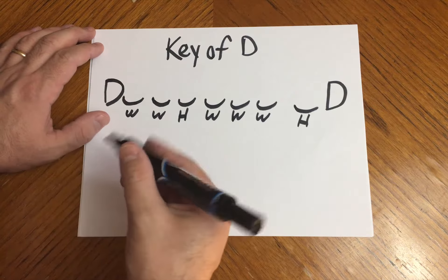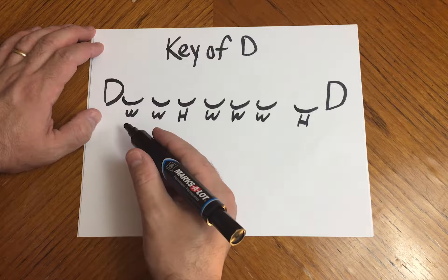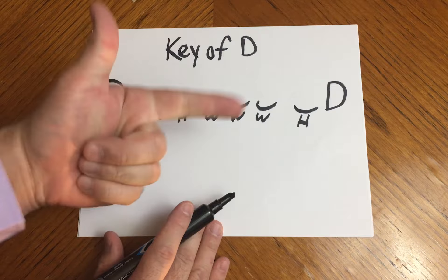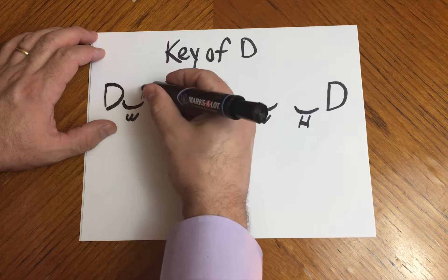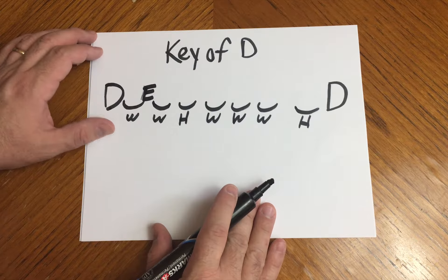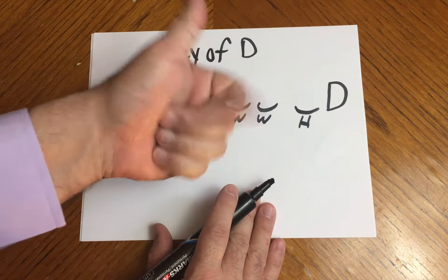So in the key of D, we're going to start with D and we're going to go a whole step. Starting with D, a whole step is D sharp E, right? Going from E, a whole step is F, F sharp.